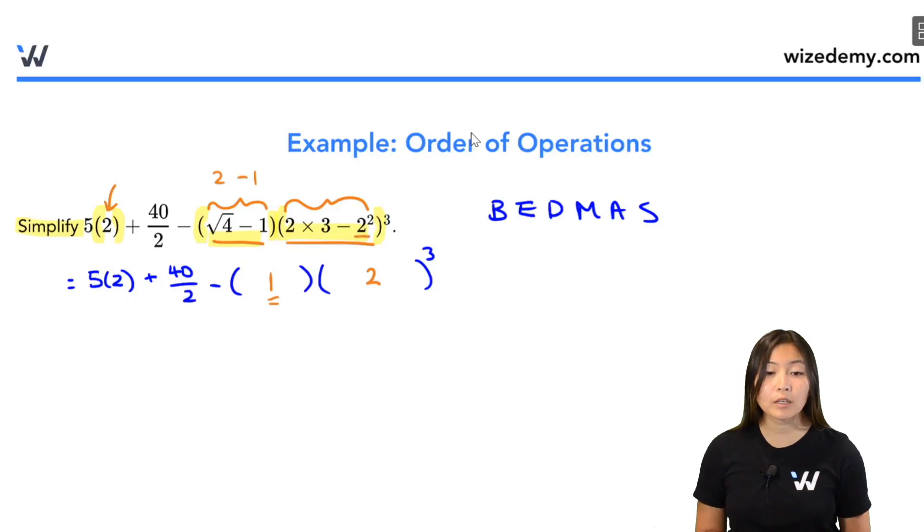In the second group, we're going to deal with exponents before we deal with multiplication. So 2 squared is 4. And then we have 2 times 3 minus 4. 2 times 3 is 6. 6 minus 4. That's how we got this 2.